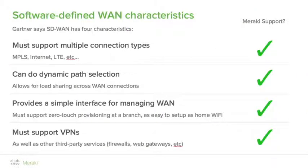Software-defined WAN characteristics. SD-WAN provides MPLS-like functionality at a fraction of the cost or complexity. There are four main areas that Gartner says are required to classify a solution as SD-WAN. The first is transport independence — the solution must be completely agnostic to the underlying connection type. It doesn't matter if you build your SD-WAN over an existing carrier MPLS network, the public internet, LTE, 3G, satellite, or even dial-up.